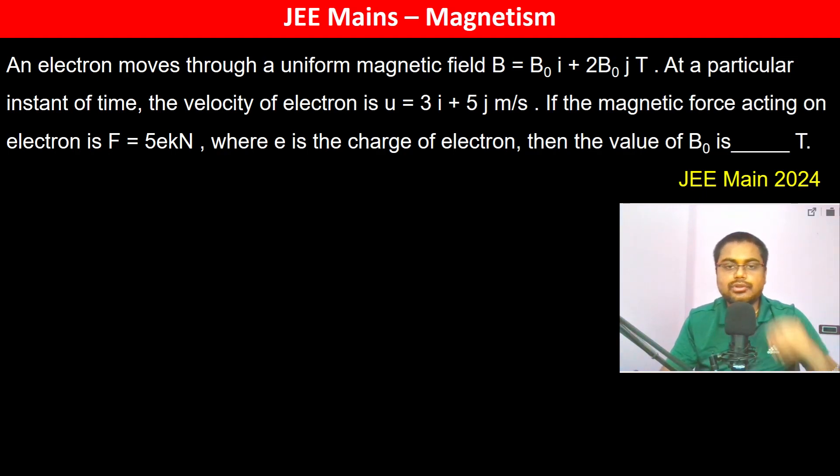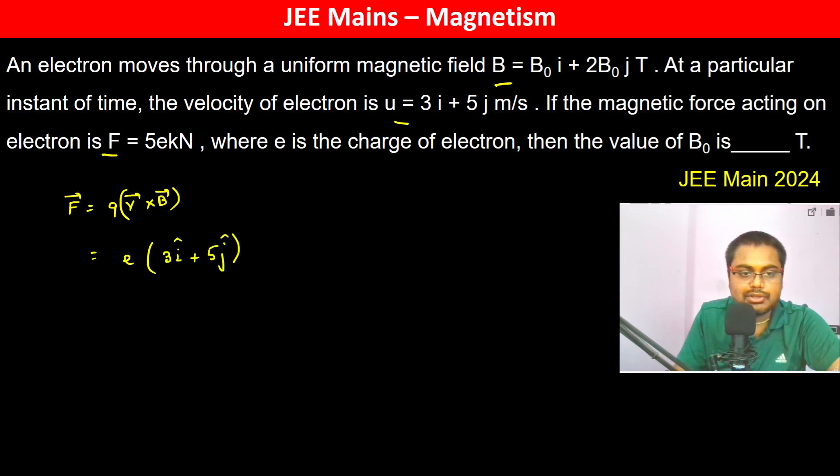An electron moves through a uniform magnetic field B = B₀î + 2B₀ĵ. At a particular instant of time, the velocity is u = 3î + 5ĵ m/s. The magnetic force acting on the electron is F = qv⃗ × B⃗. What is the charge on an electron? It's e.